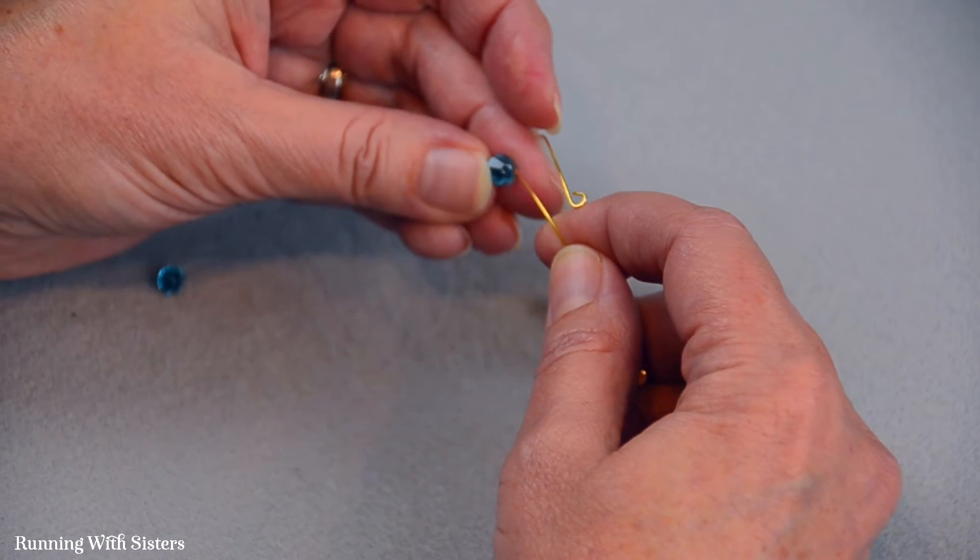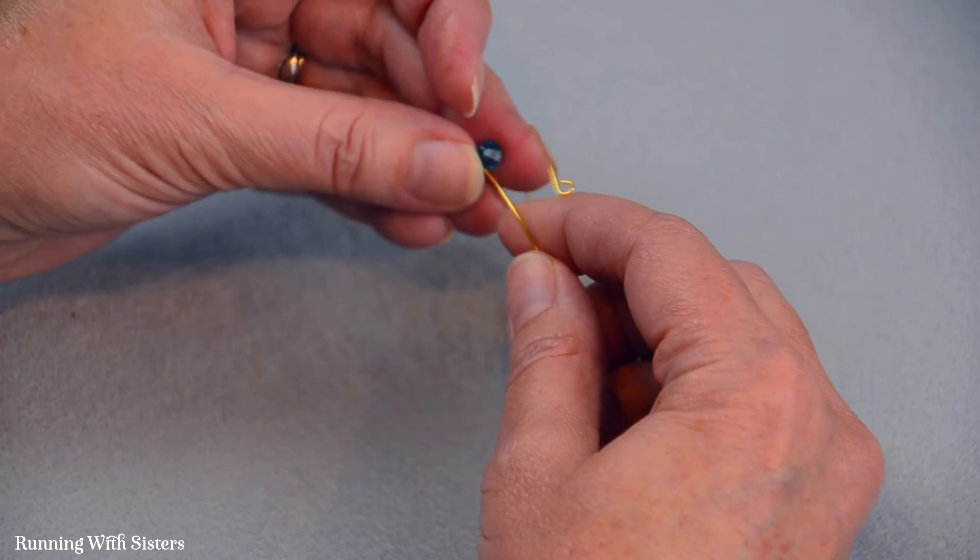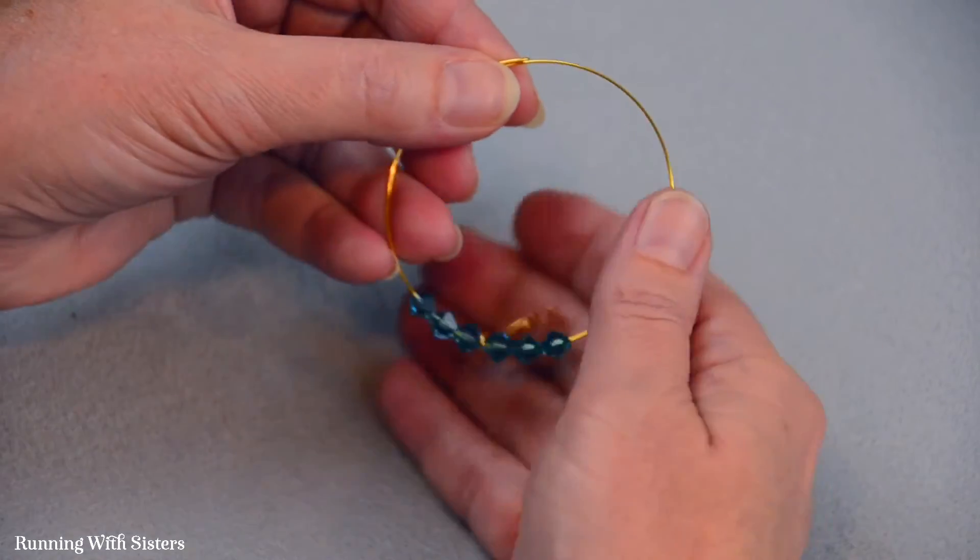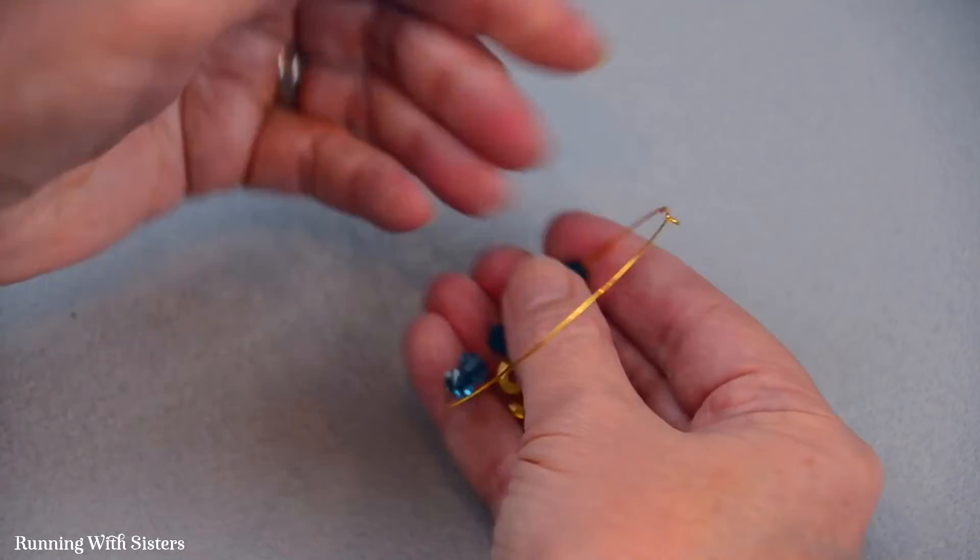And these beads are just going to slide around on this bangle. And that's the fun of it. That there's a lot of movement with this bracelet. So there are beads on there. This is an R.